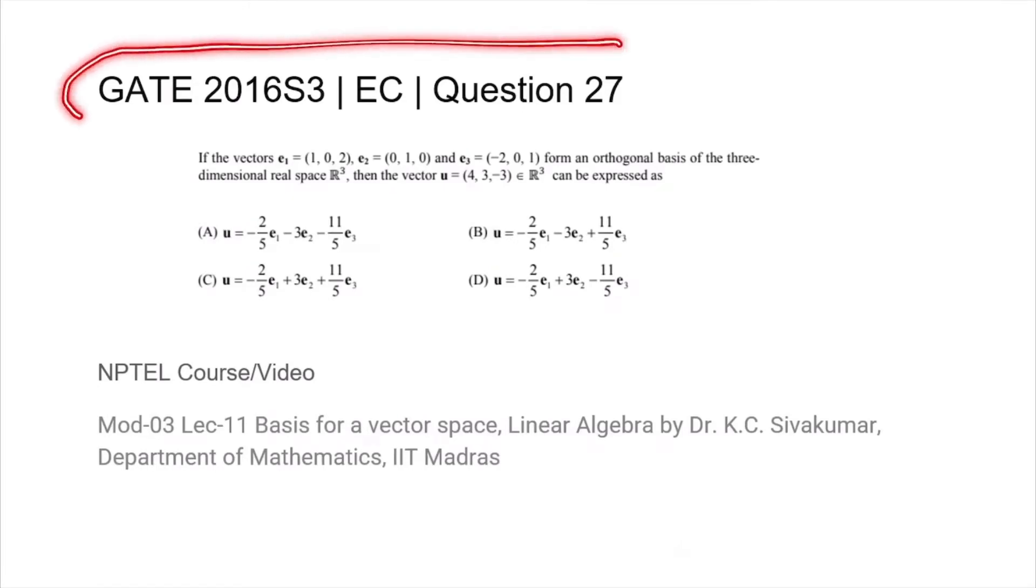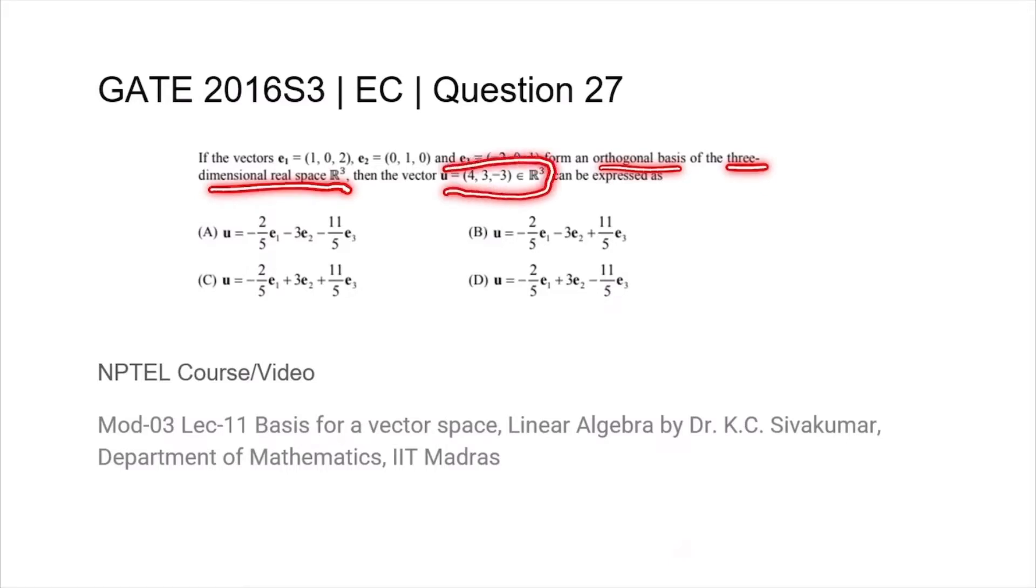This is question 27 from the GATE 2016 session 3 EC paper. We are given vectors e1, e2, and e3 and have been told that they form an orthogonal basis for R3, that is three-dimensional real space, and we are asked to find out what the representation of this vector u is in this basis.